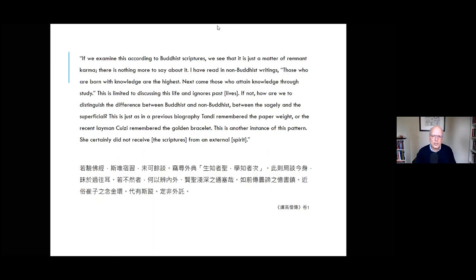One explanation is that the girl fabricated false scriptures on her own. Another is that she was possessed by a deity who transmitted them. But karma offers yet another possibility. For an explanation, Daoxuan turned to karma. If we examine this case according to Buddhist scriptures, Daoxuan tells us, we see that it is just a matter of remnant karma. There is nothing more to say about it. I have read in non-Buddhist writings: those who are born with knowledge are the highest; next come those who attain knowledge through study. This is from Confucius, from the Analects. This, though, is limited to discussing this life and ignores past lives.